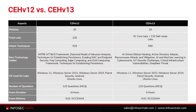The number of modules is 20, which is quite the same. For total labs, 91 core labs plus 130 self-study labs have been introduced in CEH version 13, with AI also integrated. Regarding attacking techniques, CEH version 12 had 519, while CEH v13 has 550. New technologies have been added — those from version 12 are also still included.